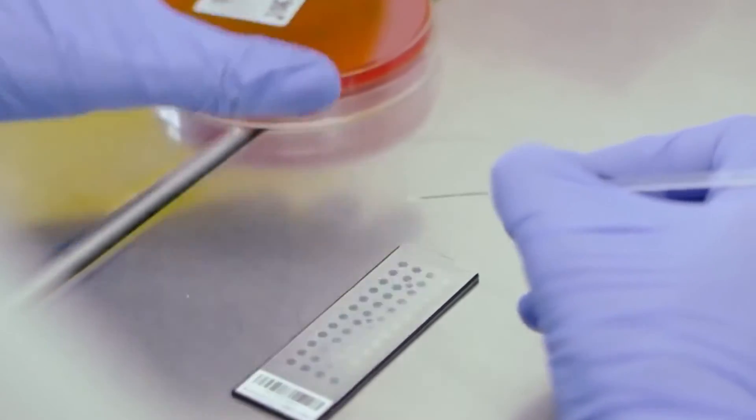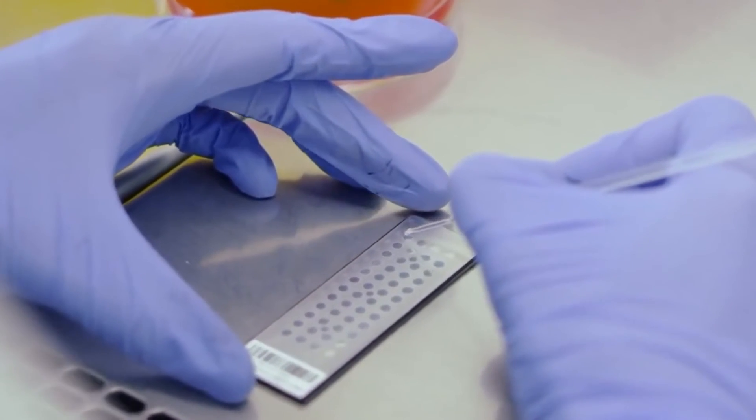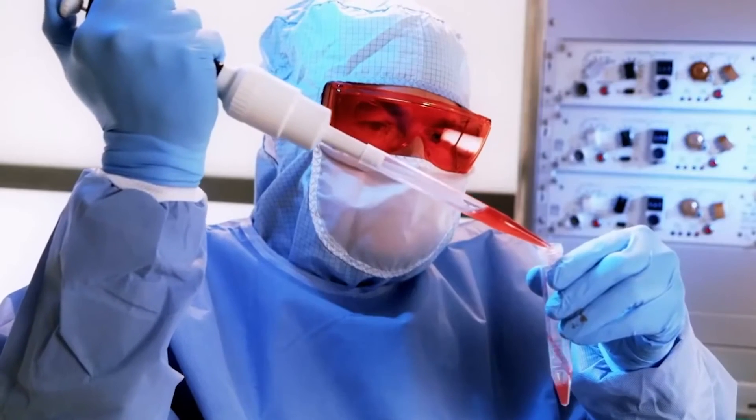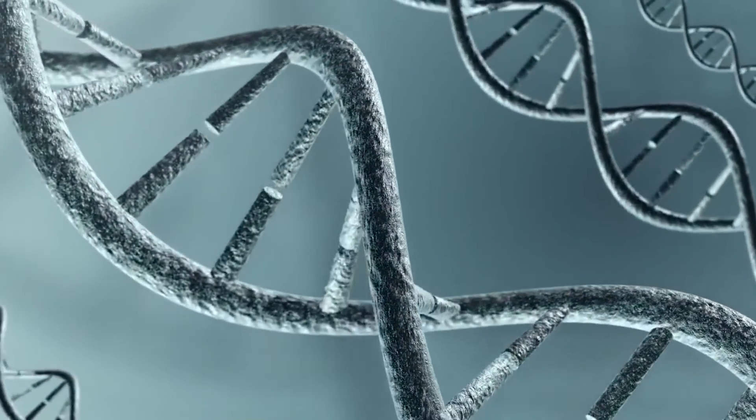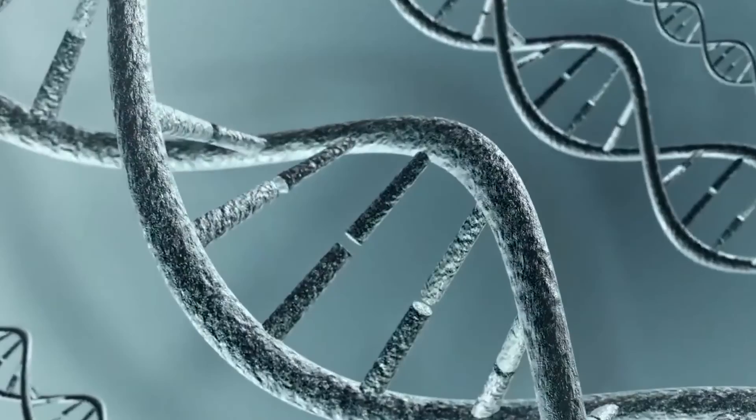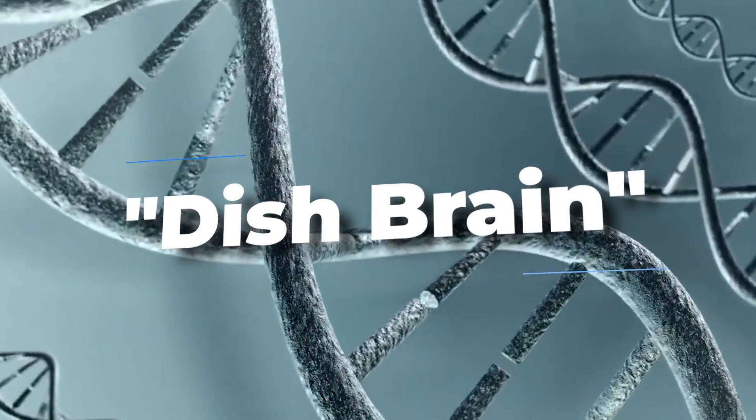The researchers created nerve cells over a tiny electronic chip to communicate with the neurons in the dish. Multiple electrodes on the chip enable electrical impulses to be sent to or read from the cells. The project was named Dish Brain by scientists.